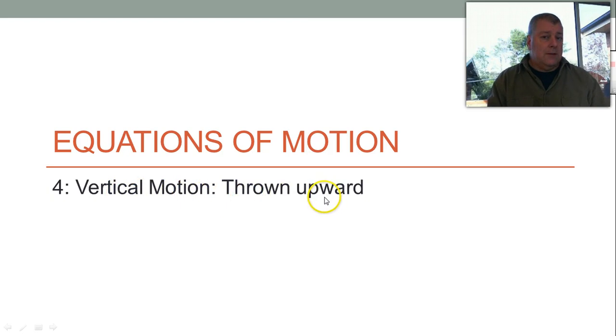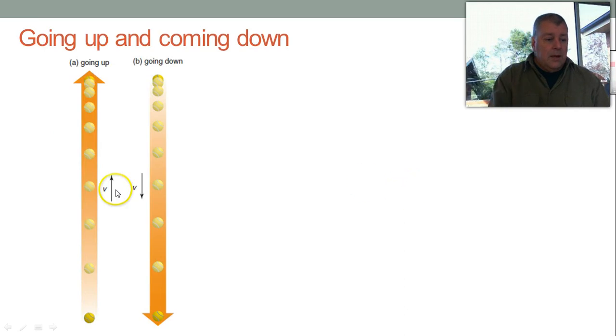So we've done vertical motion dropping and throwing, and now we're going to give it an initial velocity in the up direction. This represents, like we've all probably thrown a tennis ball up in the air and caught it again, and this is what we're doing in terms of the physics of it.